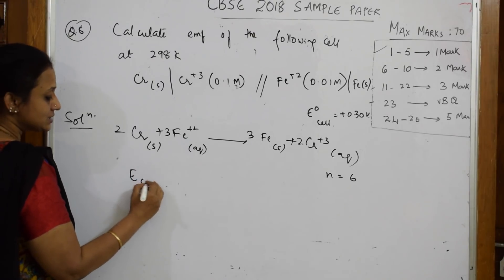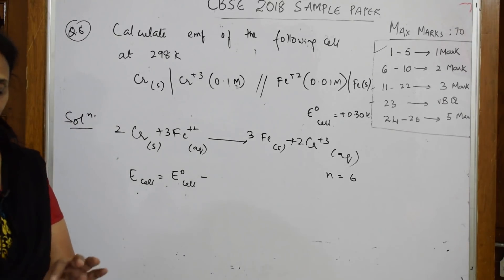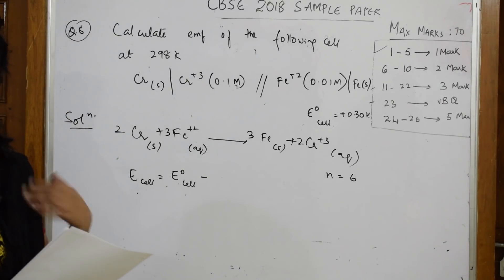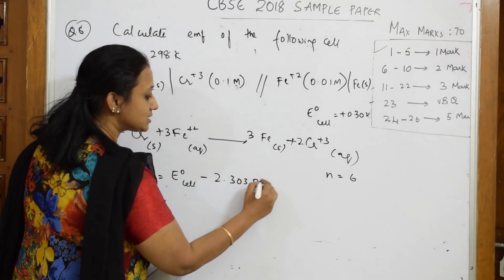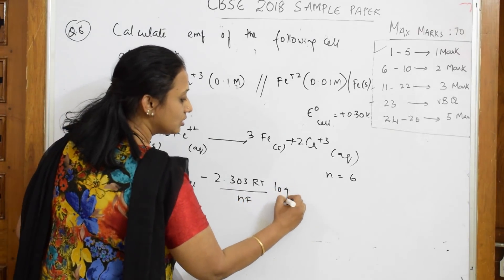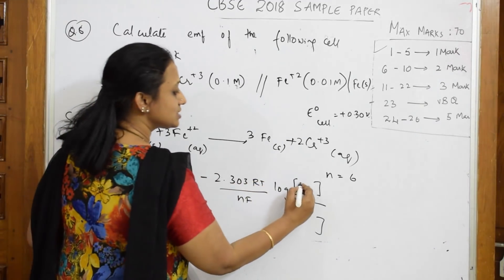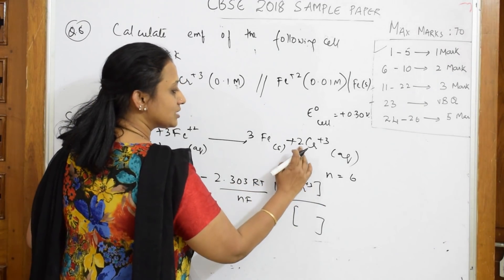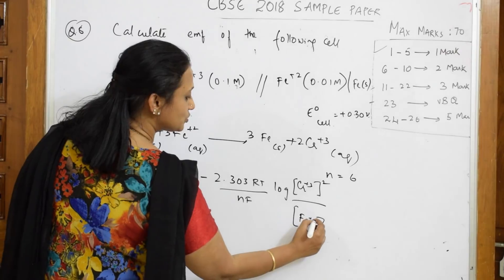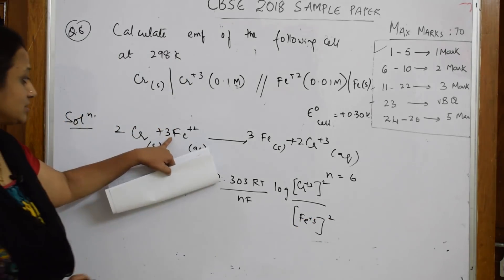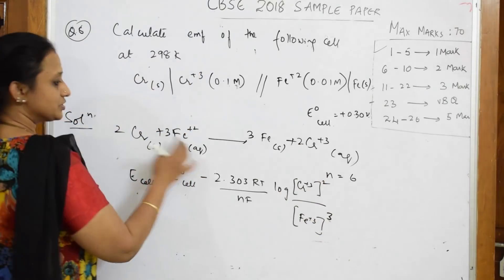Now write the Nernst equation: E_cell = E°_cell − (2.303RT/nF) × log([products]/[reactants]). The products are Cr³⁺ raised to the power 2 (coefficient 2), divided by Fe²⁺ raised to the power 3 (coefficient 3). These are the coefficients from the balanced equation.